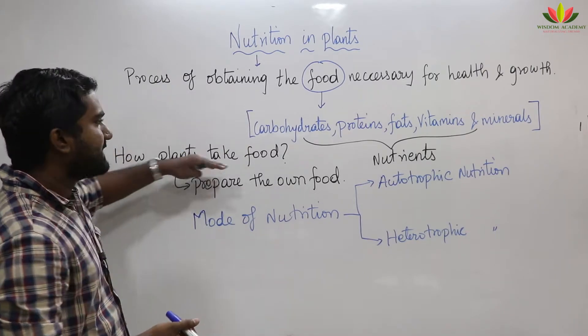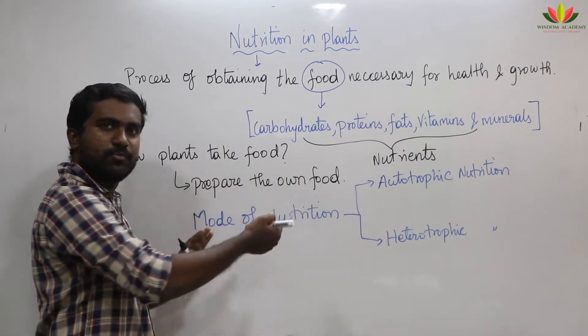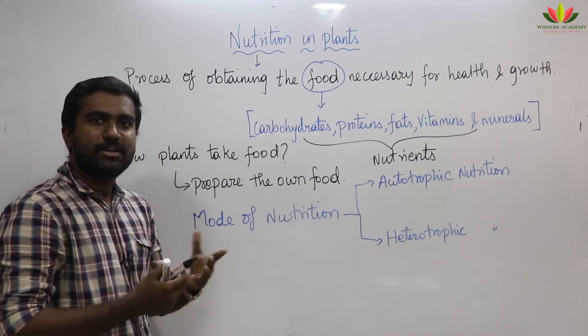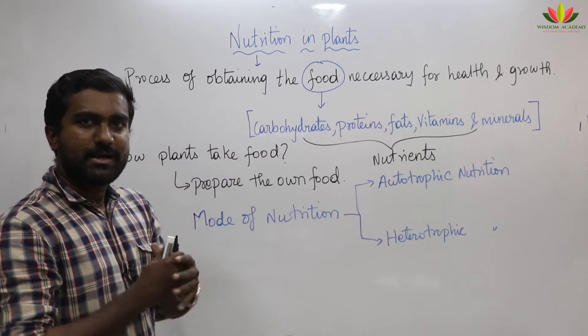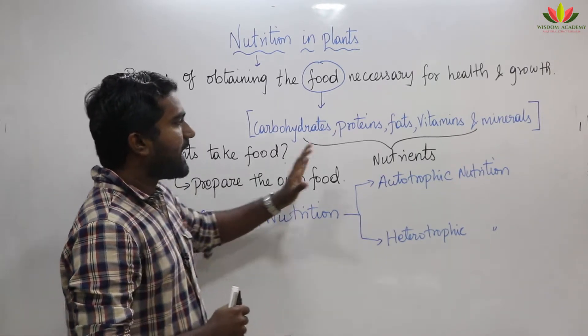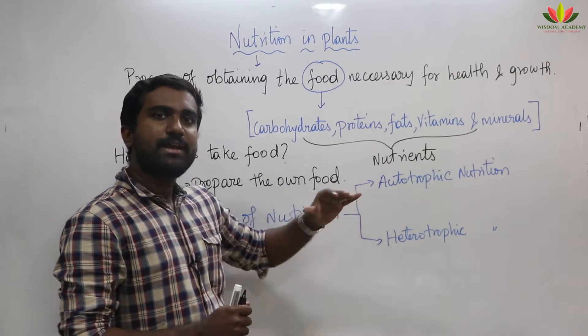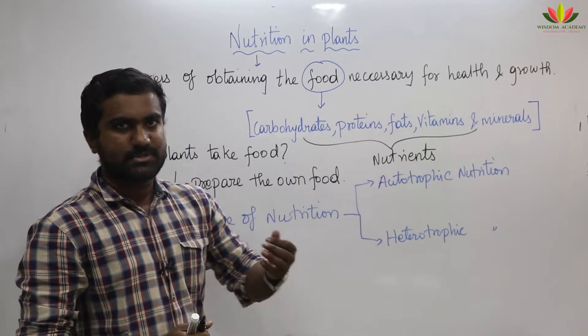How will plants take the food? Plants will prepare their own food. But animals will depend upon other organisms. According to the mode of nutrition — those who prepare their own food versus those who depend on others.